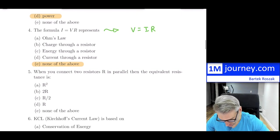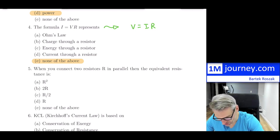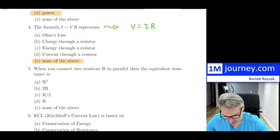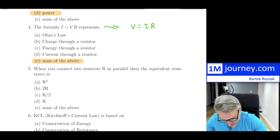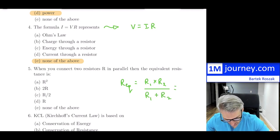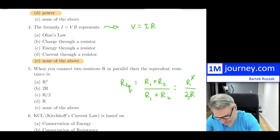Question five: when two resistors are connected in parallel, the equivalent resistance is — you may recall the formula: R_eq = (R1 × R2) / (R1 + R2). When they're equal, that's R² / 2R, which simplifies to R/2. So the answer is R over 2.